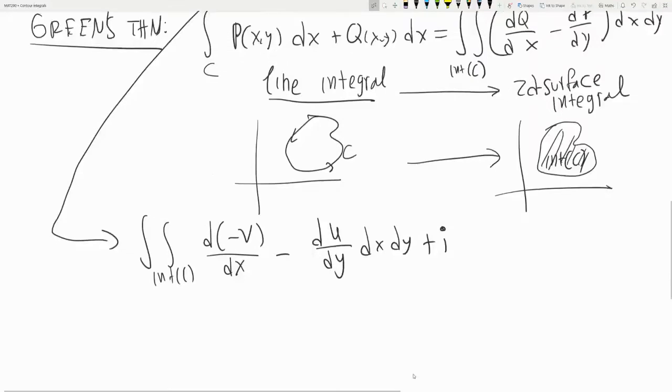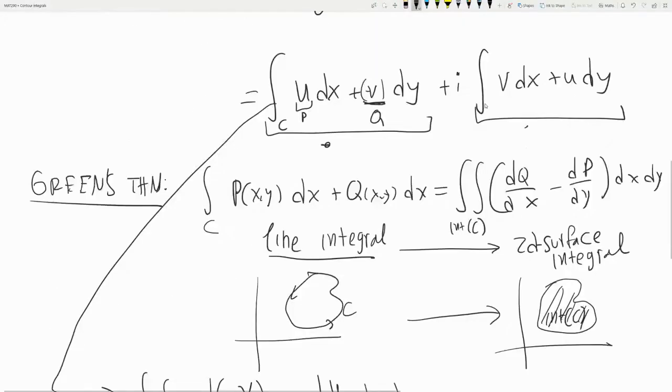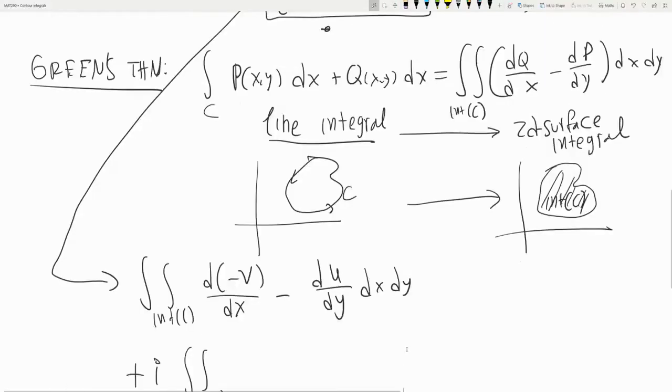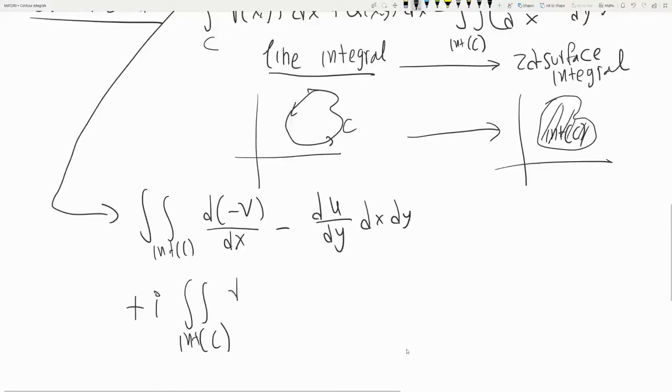Okay, and then let's do the imaginary part. So here we have this guy is P and this guy is Q. So we have V dx and dV/dy.